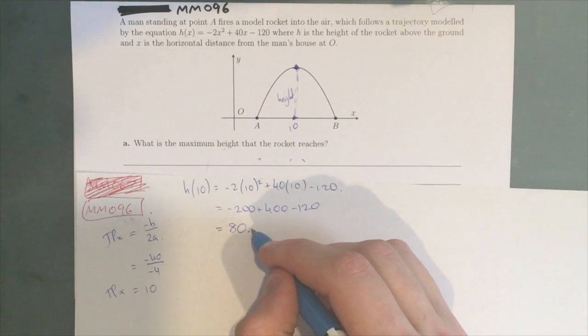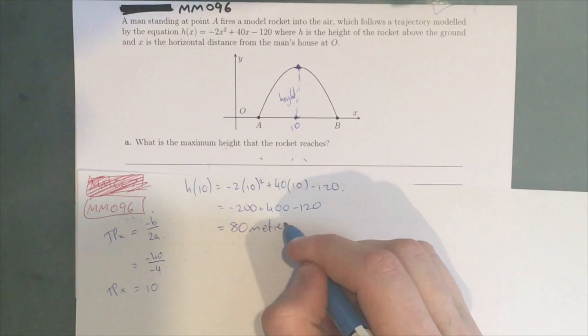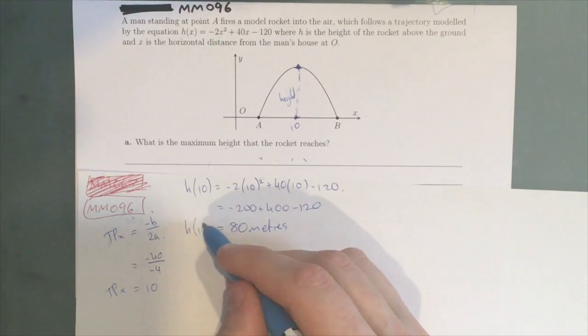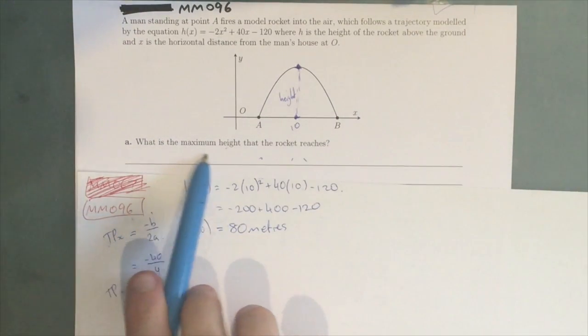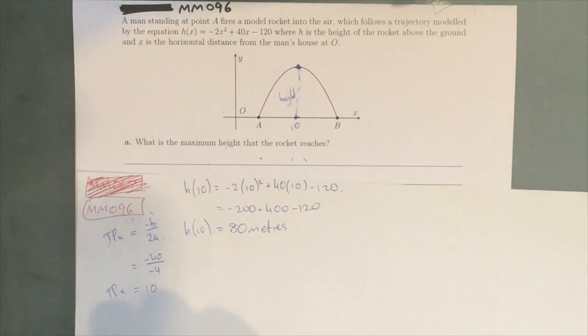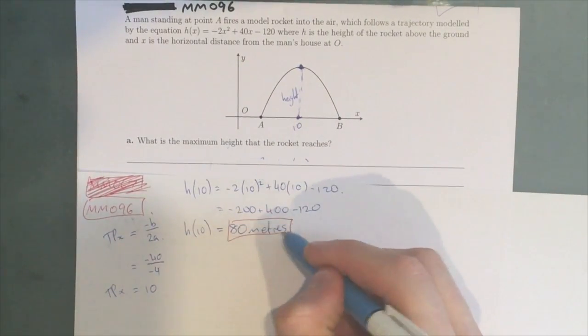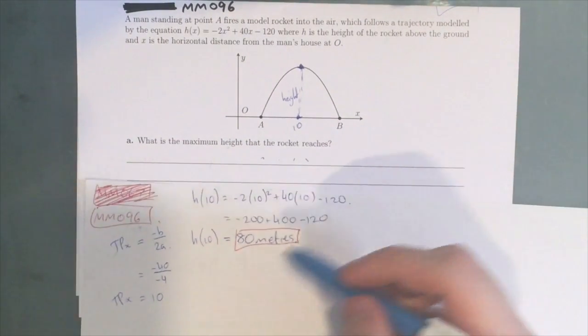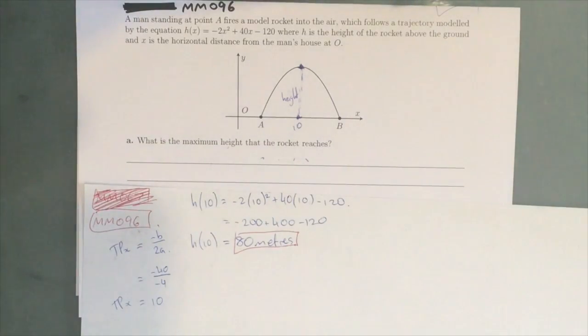So that gives us 80 meters. Do not forget the meters on the end, because the question is asking us what is the maximum height that the rocket reaches. You can't have a height without units. Never forget units. So this is our final answer, and it's simply a one-mark question, so we can write H(10) = 80 meters.